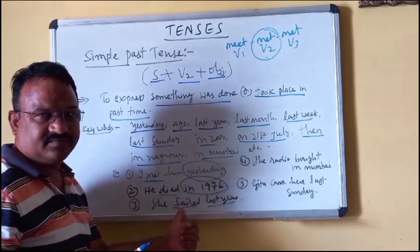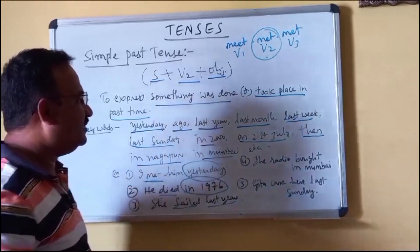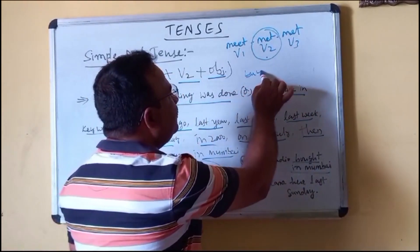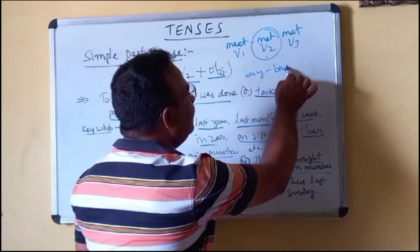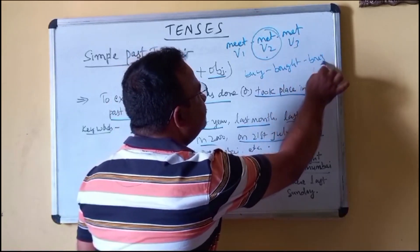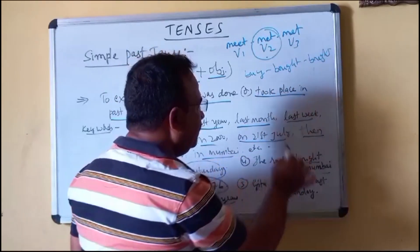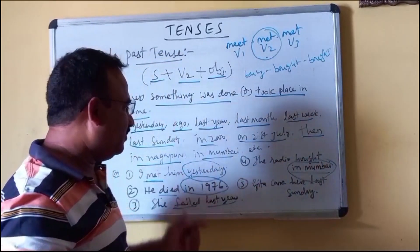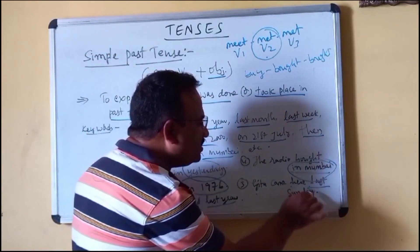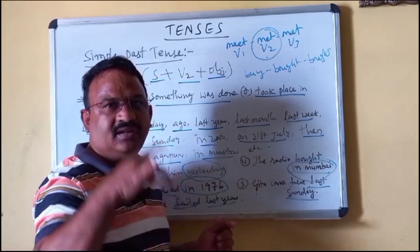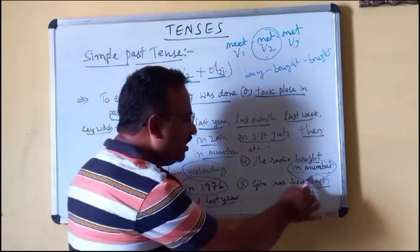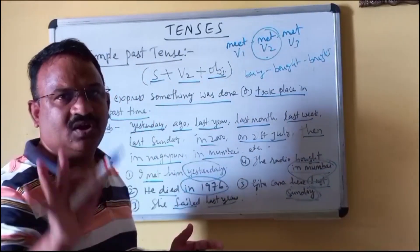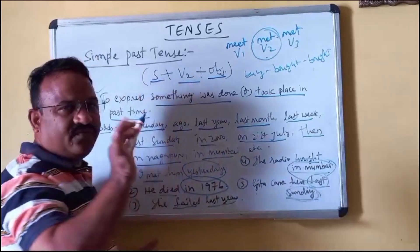'She failed last year' — keyword is 'last year,' so we use past tense — 'failed.' Also: 'He bought in Mumbai' — 'in Mumbai' is a keyword. Another example: 'Geeta came here last Sunday' — 'last Sunday' is the keyword, so we use simple past tense. This is the first condition.